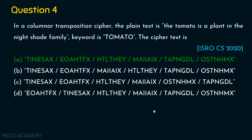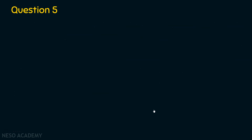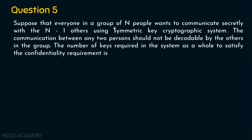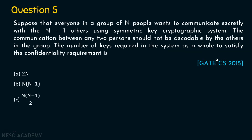Let's now move on to question number 5. Suppose that everyone in a group of N people wants to communicate secretly with N-1 others using a symmetric key cryptographic system. The communication between any two persons should not be decodable by others in the group. The number of keys required in the system as a whole to satisfy the confidentiality requirement is? This was asked in GATE Computer Science 2015. Options: A) 2N, B) N(N-1), C) N(N-1)/2, D) (N-1)².